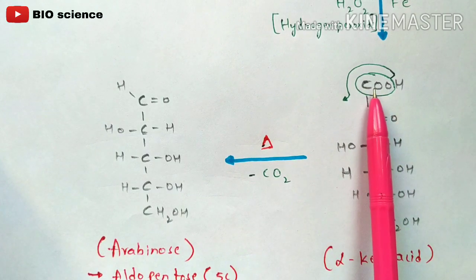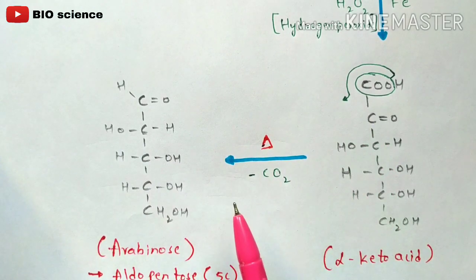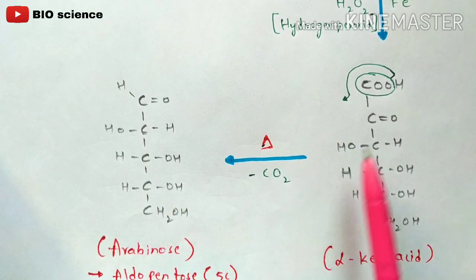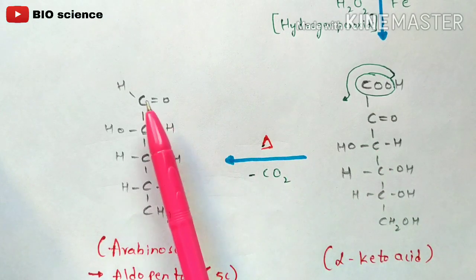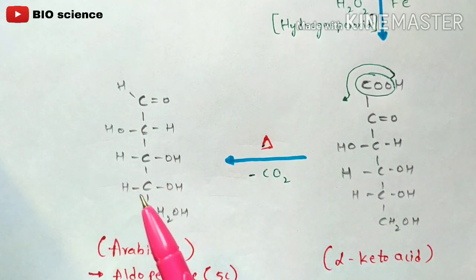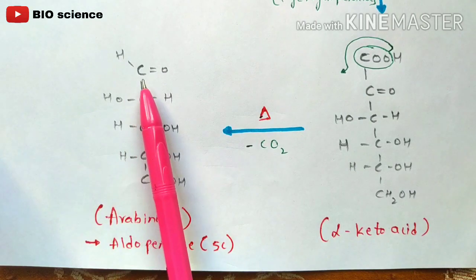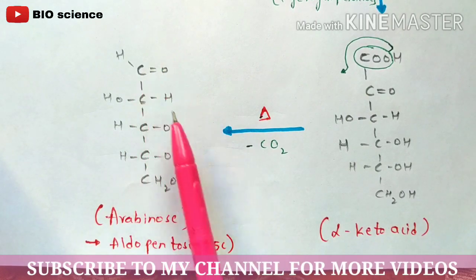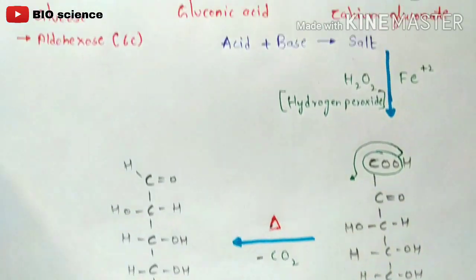Upon heating, the COO⁻ is expelled as CO₂. Once this carbon is removed as carbon dioxide, only 5 carbons remain: 1st, 2nd, 3rd, 4th, and 5th carbon. Since it is now a 5-carbon compound, it is named aldopentose — 'pentose' indicating 5 carbons and 'aldo' indicating the aldehyde group at the first carbon. The structure corresponds to arabinose, so this product is called aldopentose, specifically D-arabinose.